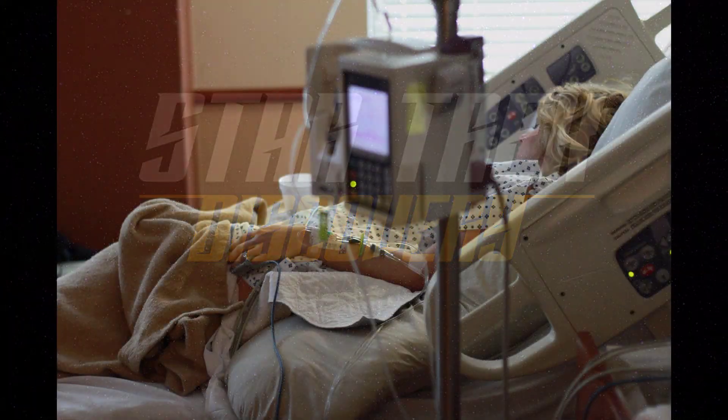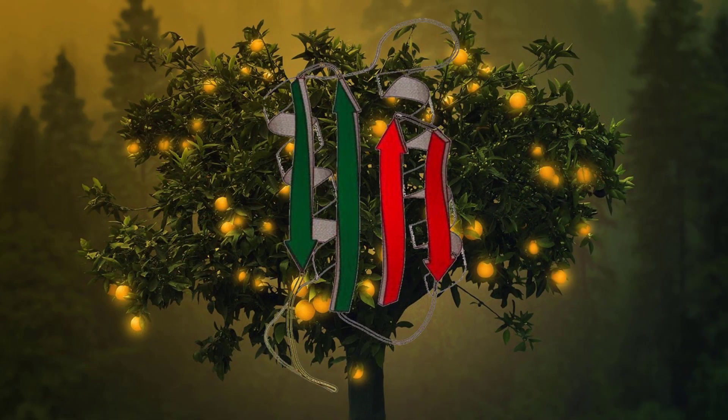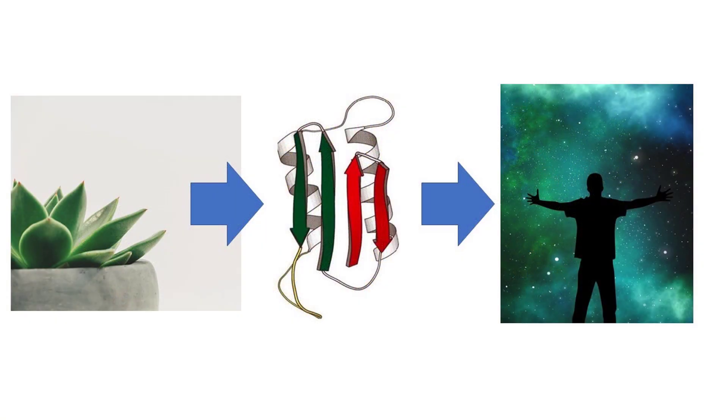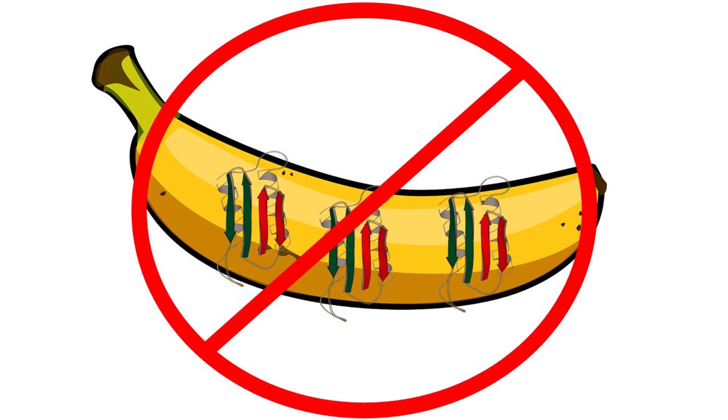Now, first, the aliens got this prion disease from eating plants that had a modified protein. Now, transmission to humans of prions that were made in plants is not something that we really know. And prion-like behavior in general isn't really well known in plant proteins. However, it's not a crazy idea.